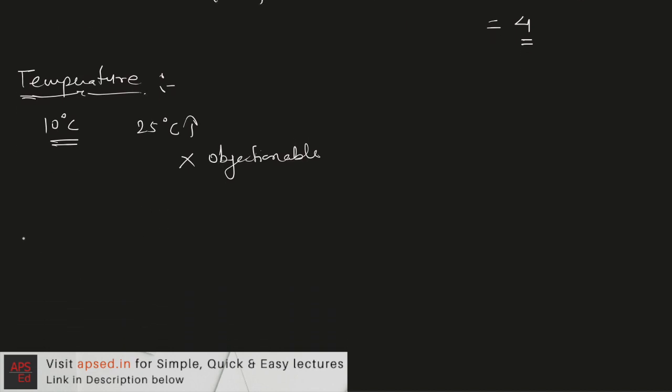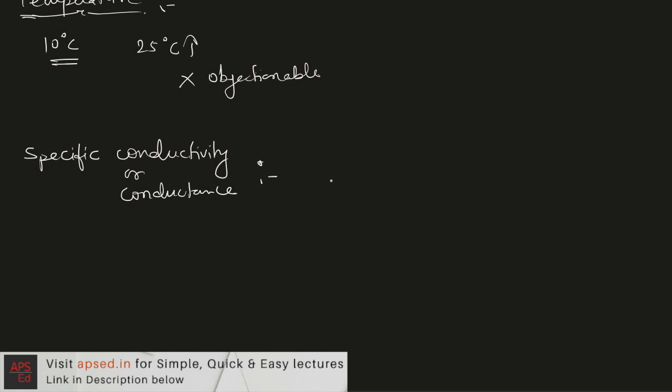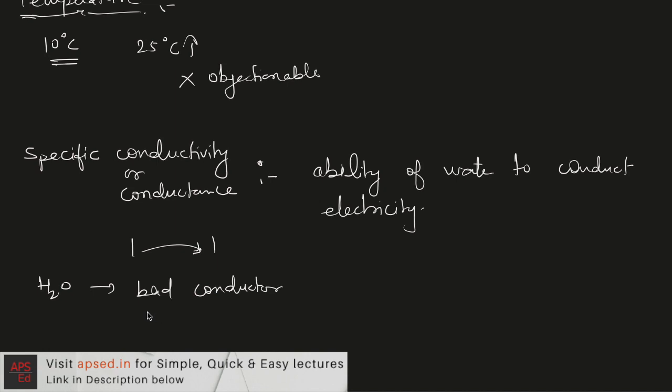Now the last physical property that we have to talk about is the specific conductivity of water. Specific conductivity, or it is also known as the specific conductance, is basically measuring the ability of water to conduct electricity. As we know that it requires the movement of ions from one end to the other end of the circuit for this electrical conductance to take place. So if we talk about the pure water, pure water is a bad conductor because it does not ionize.